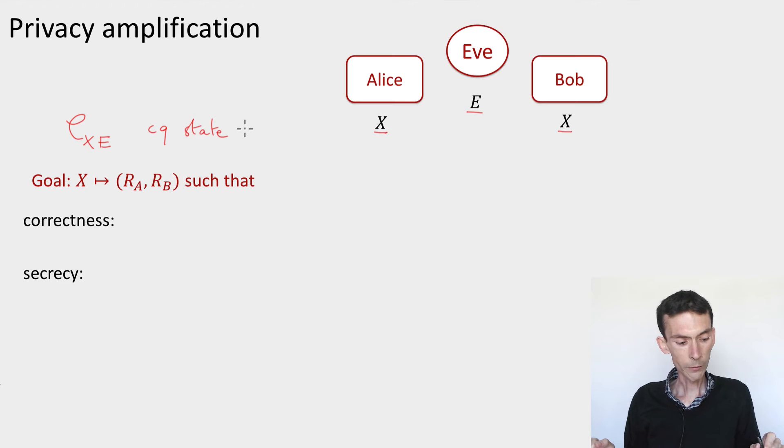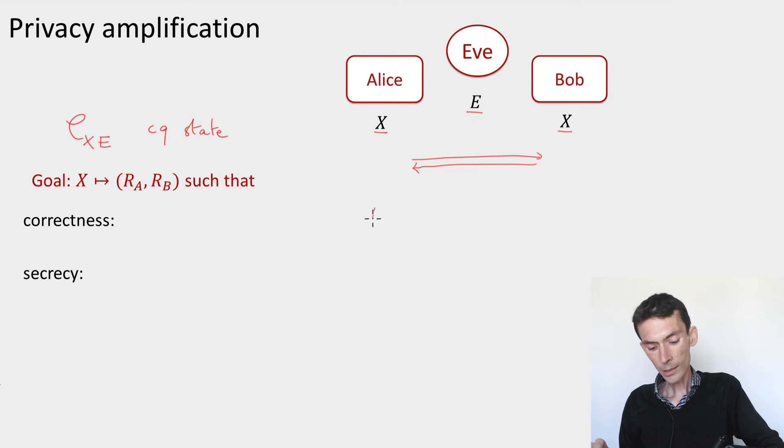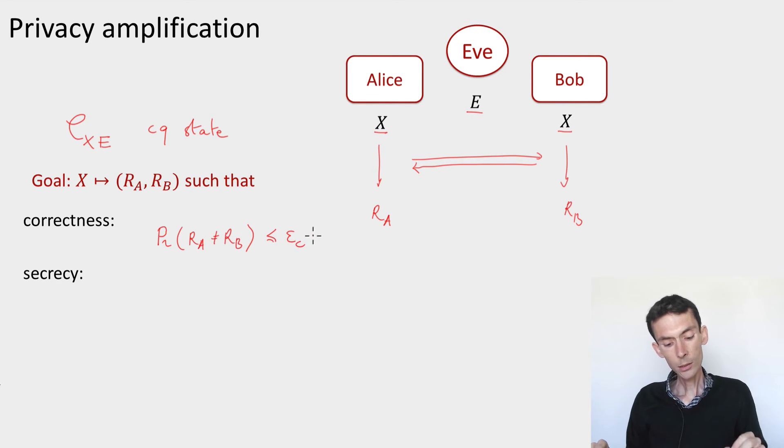The goal of privacy amplification is to design a protocol that involves communication between Alice and Bob, such that at the end of the protocol, Alice comes up with a string rA, Bob with a string rB, such that two things should hold. First of all, we'd like the protocol to be correct. And here correctness means simply that Alice and Bob come up with the same string. So the probability that rA is different from rB should be less than εc, where εc will be the correctness parameter.